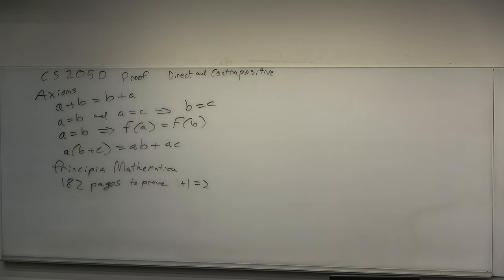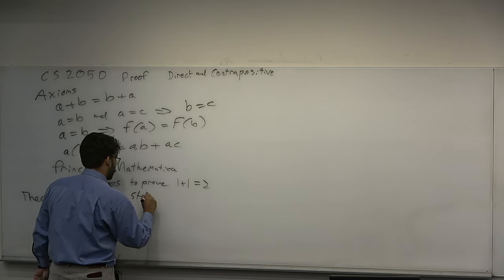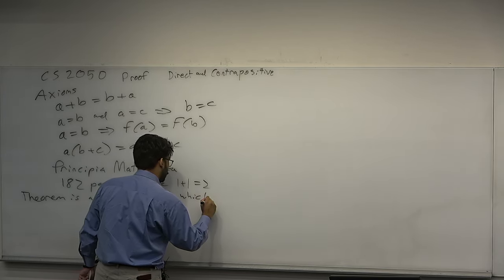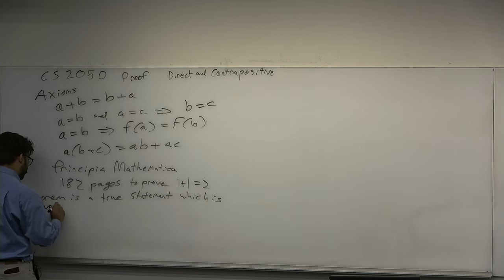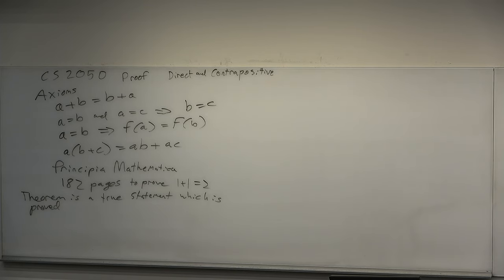An axiom is true — it needs no proof, it's simply assumed to be true. A theorem is a true statement which is proved. Given a set of axioms, a proof is an argument combining axioms using the laws of thought — which are themselves axioms — to deduce a theorem. A theorem is not assumed to be true; it is proven to be true. Using the axioms, you deduce a theorem.